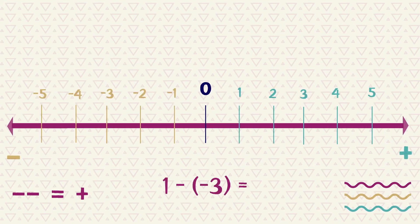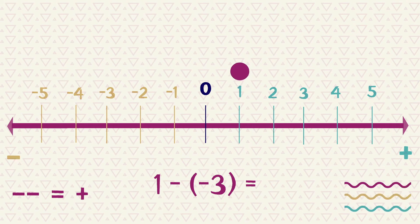Let's have a look at this on the number line. So we start at 1 and because we are actually just adding the 3, we end up at 4.